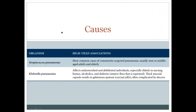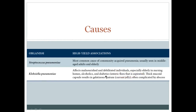Streptococcus pneumoniae accounts for 95% of lobar pneumonia and is the most common cause of community-acquired pneumonia, classically seen in middle-aged adults and the elderly. Klebsiella pneumoniae represents about 5% of lobar pneumonia. It is an enteric flora that is aspirated, so it is classically seen in patients at increased risk for aspiration — for example, elderly in nursing homes and alcoholics.